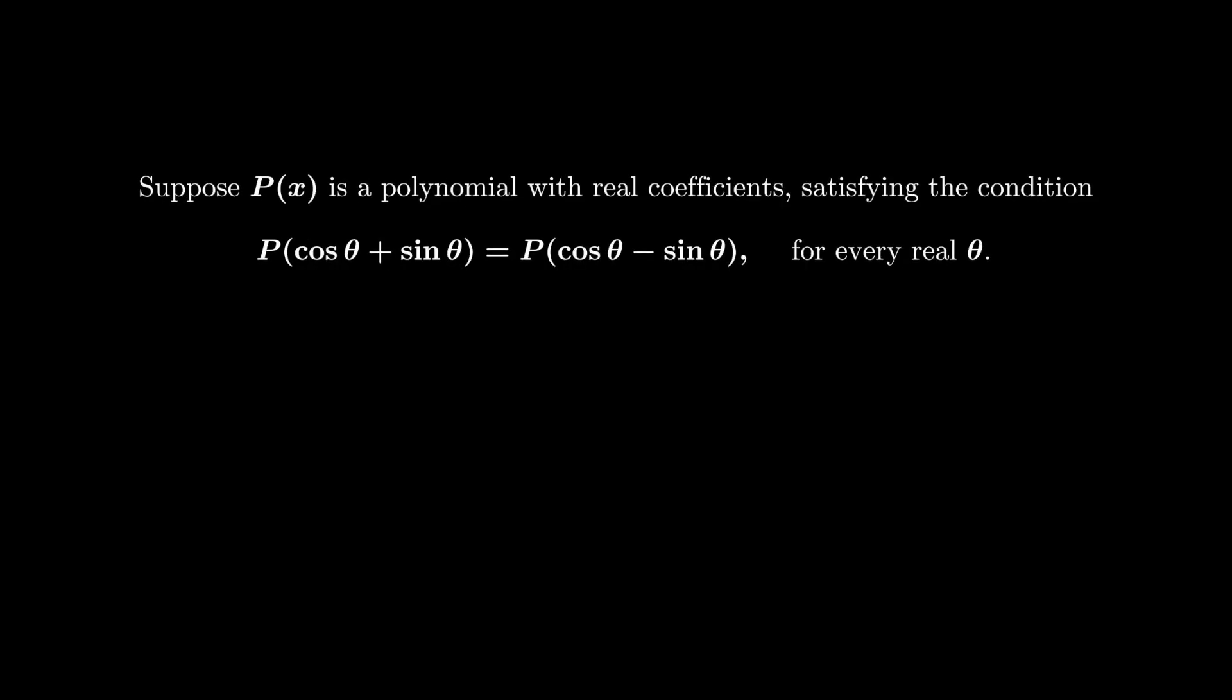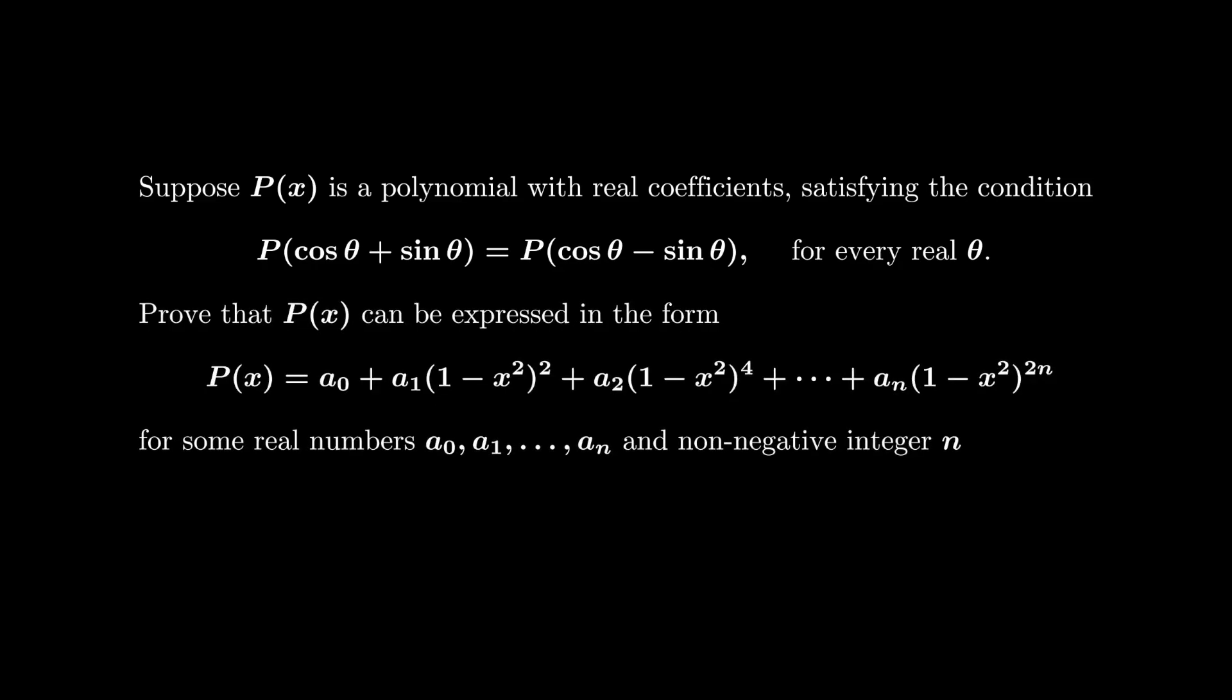Suppose a polynomial P(x) satisfies the following condition: P(cos θ + sin θ) = P(cos θ - sin θ) for every real θ. We want to prove that P(x) can be expressed in the form P(x) = a₀ + a₁(1 - x²)² + a₂(1 - x²)⁴ + ... + aₙ(1 - x²)^(2n), where each term is a power of (1 - x²) and all the powers are even.